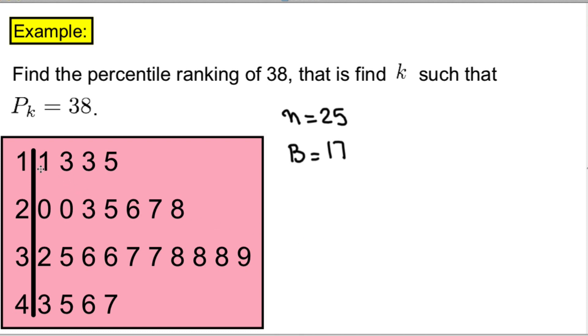Looking at the stem plot, counting 1, 2, 3, 4, 5, 6, 7, 8, 9, 10, 11, 12, 13, 14, 15, 16, 17. There are 17 data values that are strictly below 38.